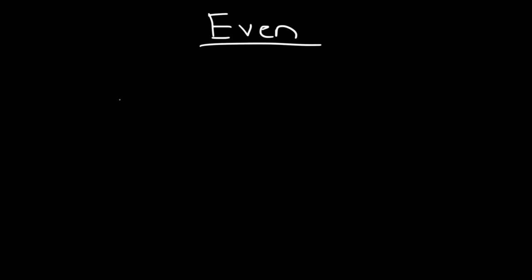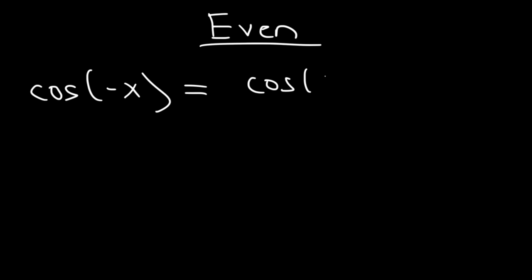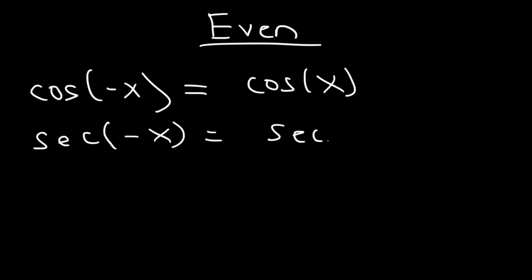Now let's talk about even and odd functions. Let's go over the even functions first. Cosine is an even function: cosine of negative x is equal to cosine of x. And the reciprocal of cosine, which is secant, is also an even function. Secant of negative x is equal to secant x.